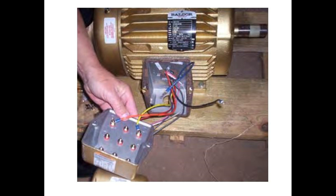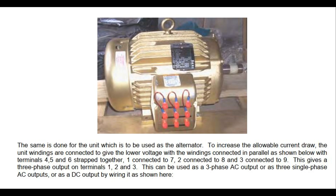The same is done for the unit used as the alternator. To increase the allowable current draw, the unit windings are connected to give the lower voltage with the windings connected in parallel, with terminals 4, 5 and 6 strapped together, 1 connected to 7, 2 connected to 8, and 3 connected to 9. This gives a three-phase output on terminals 1, 2 and 3. This can be used as a three-phase AC output, three single-phase AC outputs, or as a DC output by wiring it as shown.